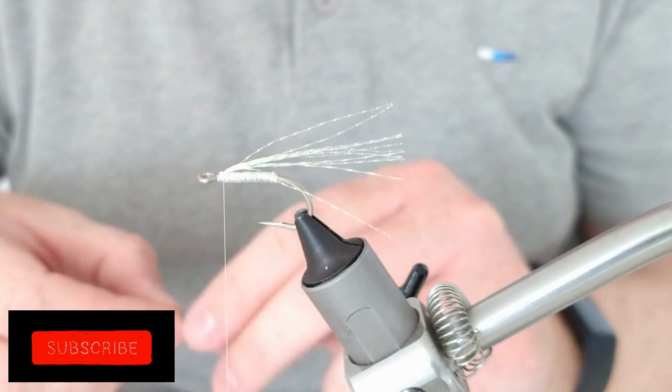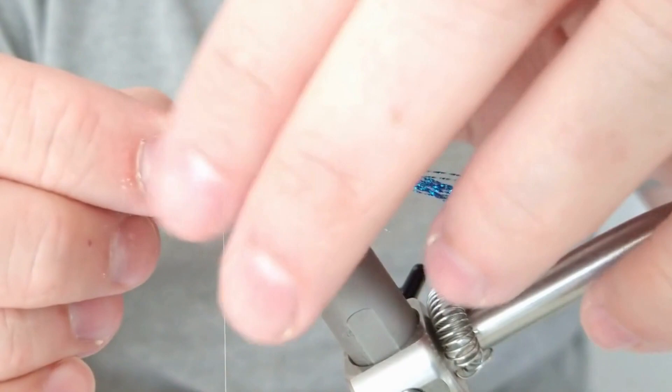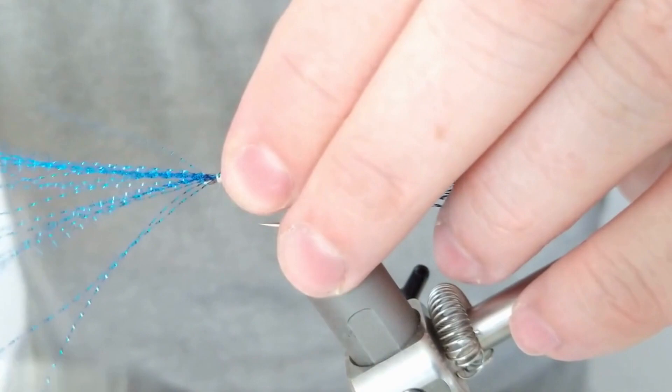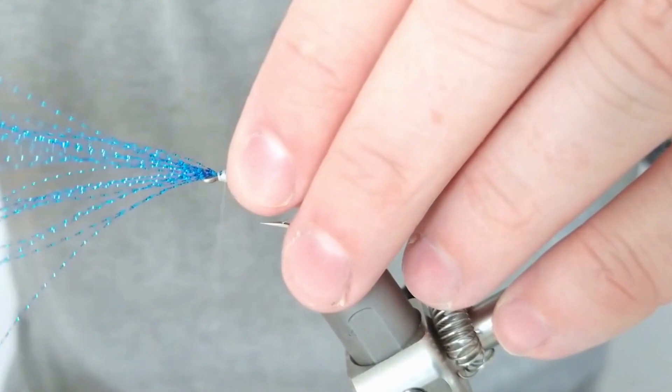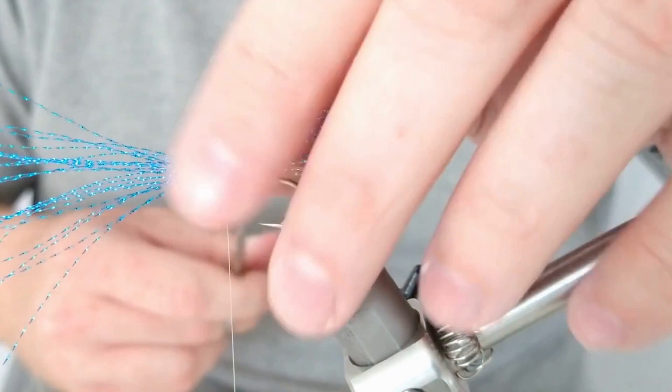And then the overwing is going to be blue crystal flash. Just secure that in on top, and again just have that about the same length.